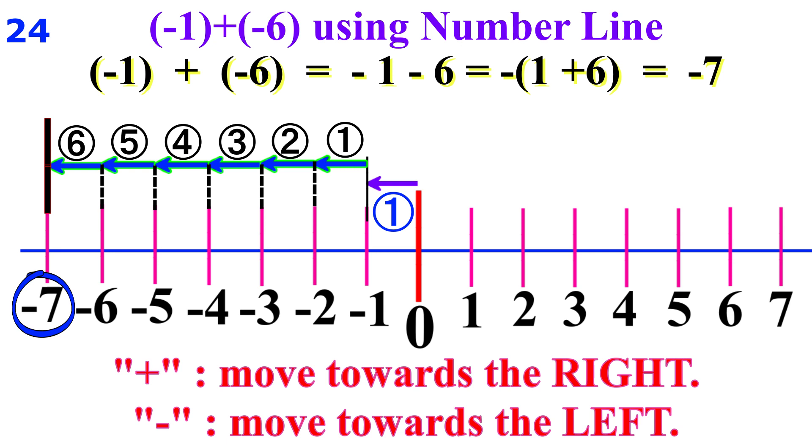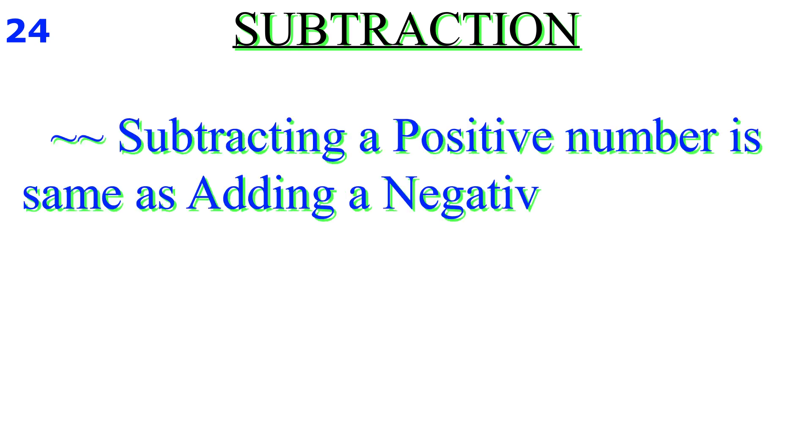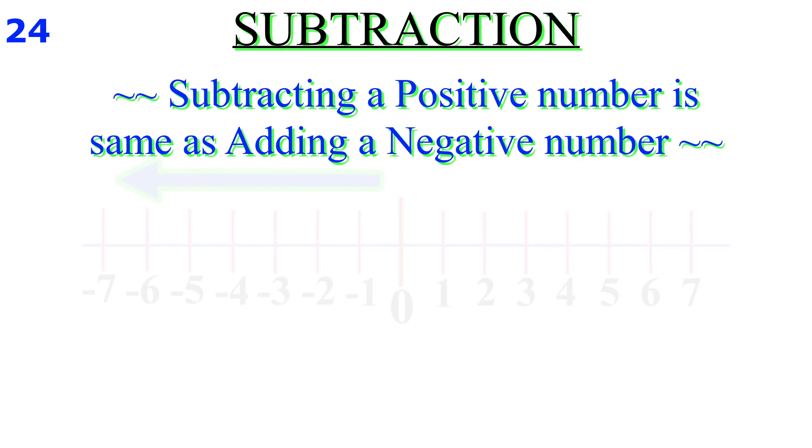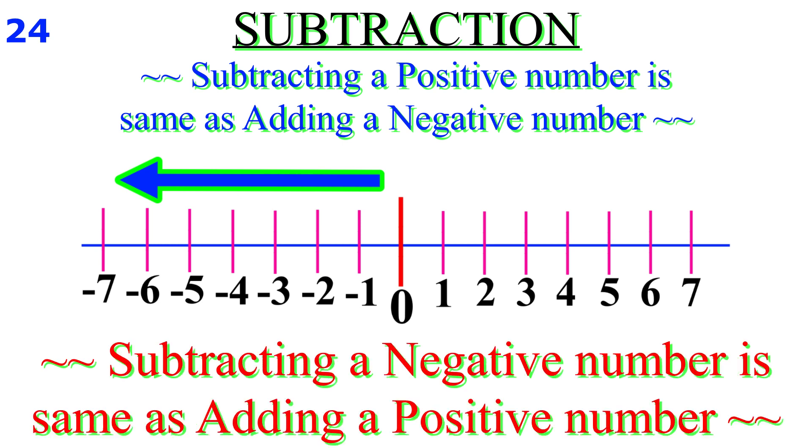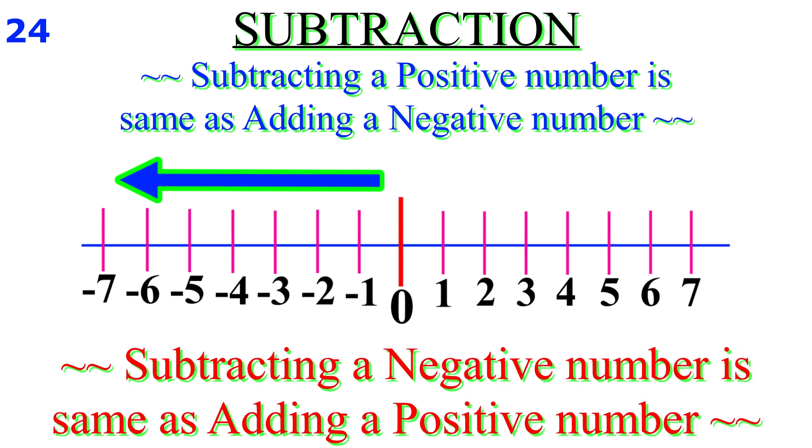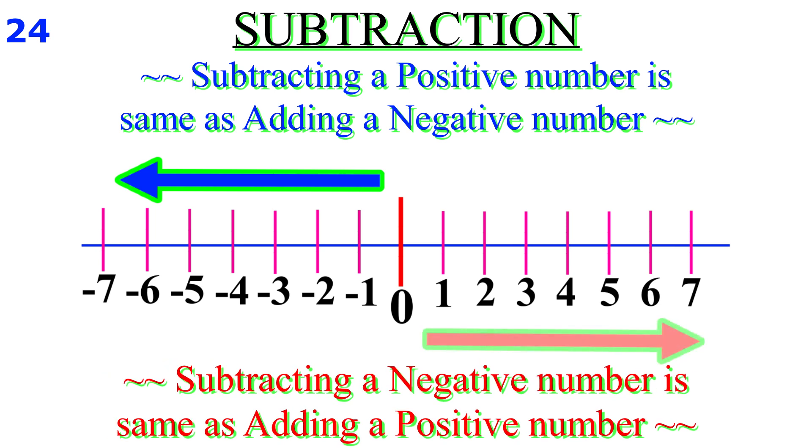Friend, subtracting a number is the same as adding its opposite. So subtracting a positive number is like adding a negative; you move to the left on the number line. Subtracting a negative number is like adding a positive; you move to the right on the number line.